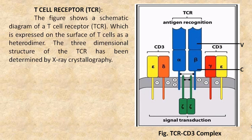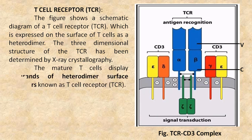The figure shows a schematic diagram of T cell receptor which is expressed on the surface of T cells as a heterodimer. The three-dimensional structure of T cell receptor has been determined by X-ray crystallography. The mature T cells display thousands of heterodimer surface receptors known as T cell receptor.